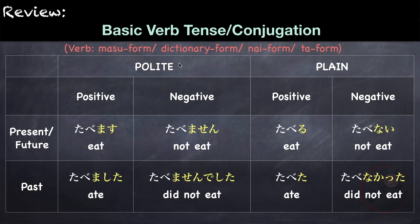So this is the polite form. For the plain form, we have the positive present or future tense — those are verbs ending in ru or the u line. For example, tabemasu becomes taberu, but the meaning is the same, only in plain form. For positive past form, we use the ta form, which we just learned. Tabemashita becomes tabeta, but they mean the same thing, only in plain form.